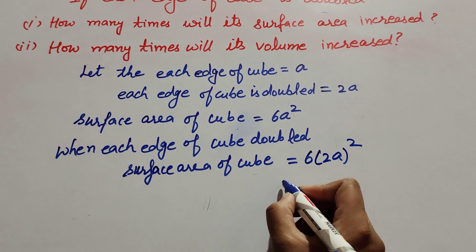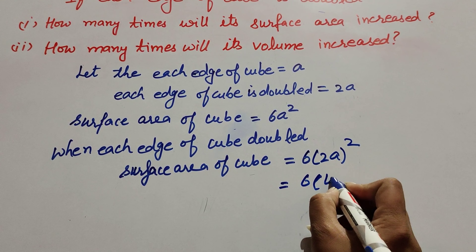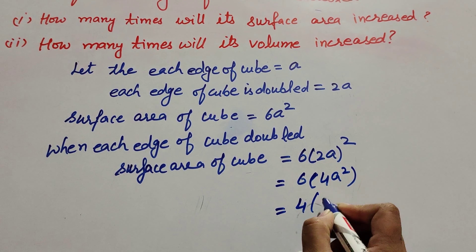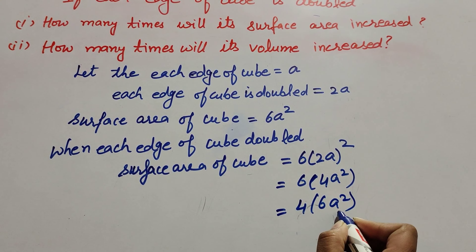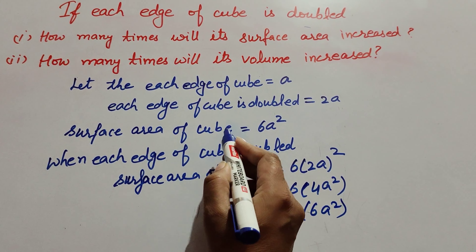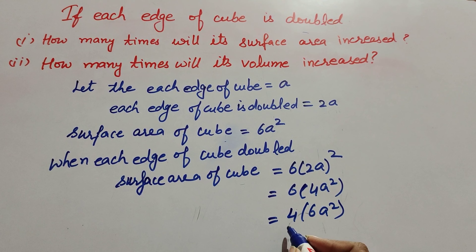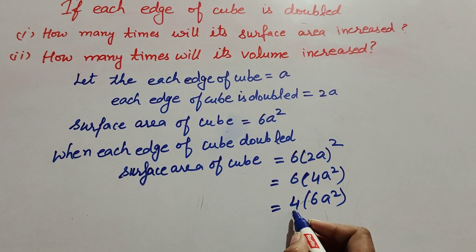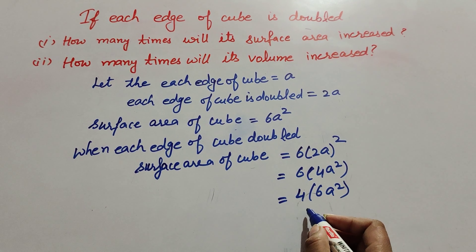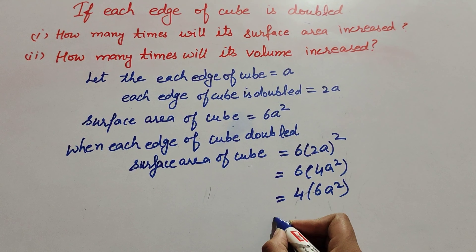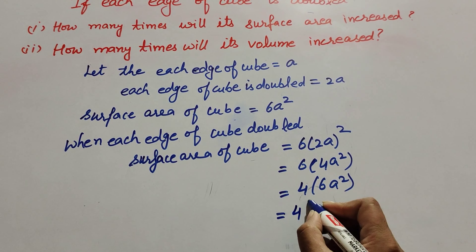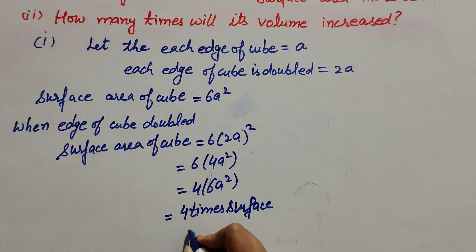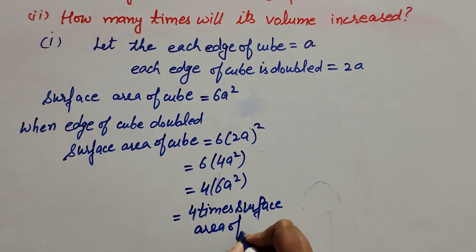6 into (2a)² equals 6 into 4a², which is 4 times 6a². Since 6a² is the original surface area, when each edge of the cube is doubled, the surface area increases 4 times.